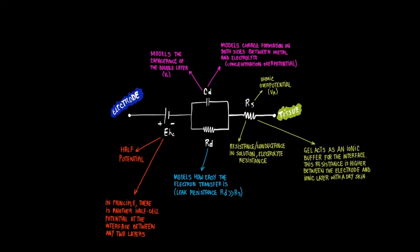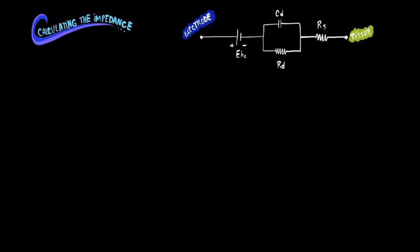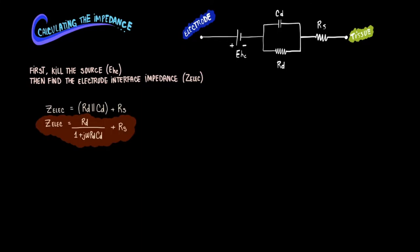Now that we have the electrode model, the electrical model, we can compute the model impedance. First we need to kill the source, that is kill the half cell potential, then we can find the electrode impedance using the tools we discussed in earlier videos. The RD and the CD are in parallel while the RS is in series with RD and CD. The final electrode impedance is RD over 1 plus j omega times RD times CD, then all of that is added to RS.